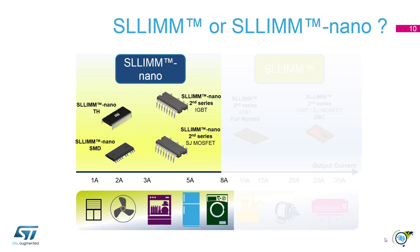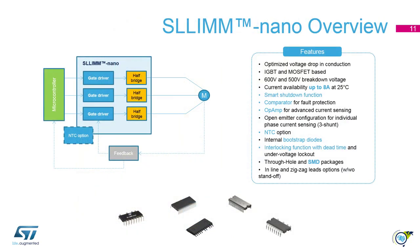Let's start with the SLIMnano. On the left side we see a block diagram of the SLIMnano content. It consists of three half bridges driven by three gate drivers, and the NTC option is shown as well. You can choose between different options such as op-amp, comparator, and NTC. All modules have open emitter connection for three-shunt current sensing and they accommodate the bootstrap diodes.